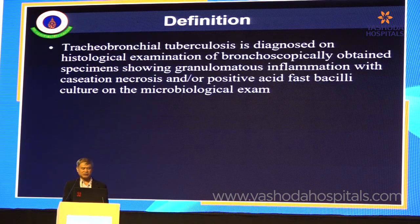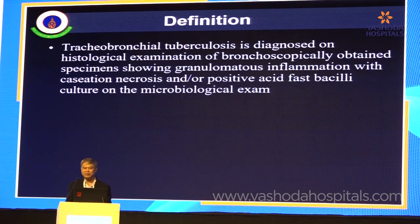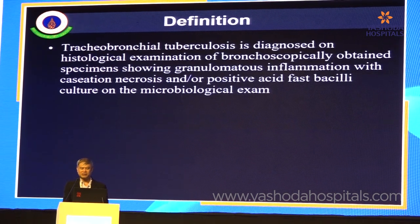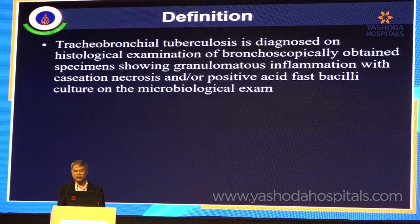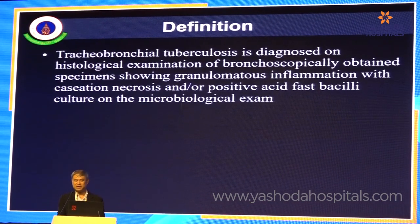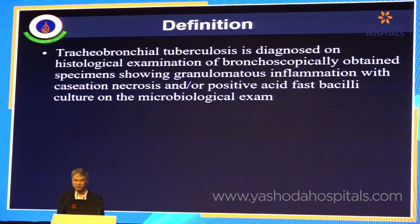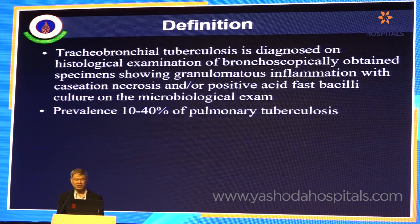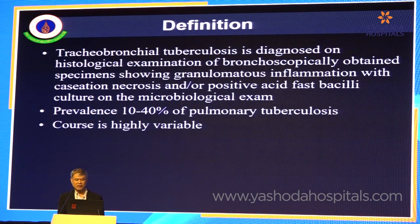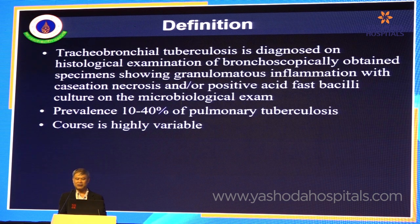The definition of endobronchial tuberculosis requires histological examination of lesions endoscopically, showing granulomatous inflammation with caseation necrosis, or positive acid-fast bacilli on cultures from the sections. Its prevalence is around 10 to 40% of all pulmonary tuberculosis, and surprisingly the clinical presentation is very variable, making it hard to diagnose clinically.